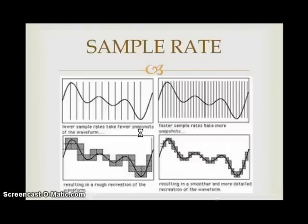For time-domain signals, the unit of sampling rate is Hertz, sometimes known as samples per second. The reciprocal of the sampling frequency is the sample period or sample interval. There are sampling theorems such as the Nyquist-Shannon sampling theorem, which states that perfect reconstruction of a signal is possible when the sampling frequency is greater than twice the maximum frequency of the signal being sampled.